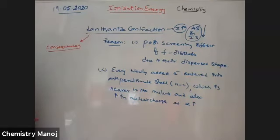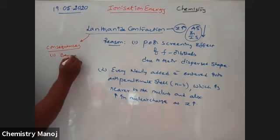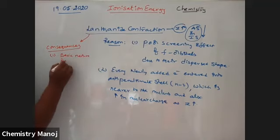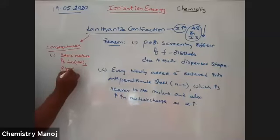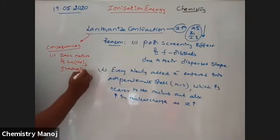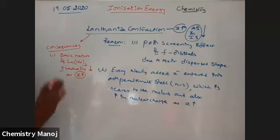The consequences of lanthanide contraction: because of this contraction, the most important consequence is that the basic nature of lanthanide hydroxides gradually decreases as Z value increases. Because atomic number increases, size decreases, and therefore basic nature decreases.